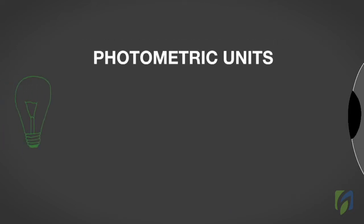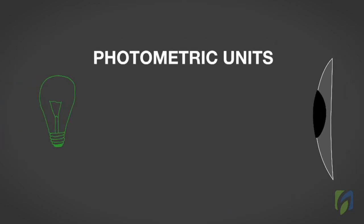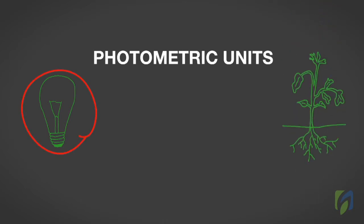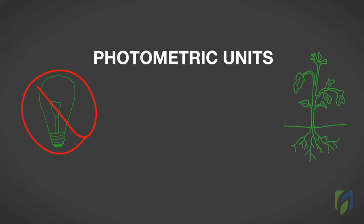Also, photometric units represent the amount of light perceived by the human eye. This is primarily green light, which is the type of light plants do not absorb and only reflect. Green light is not used by the plants for photosynthesis.